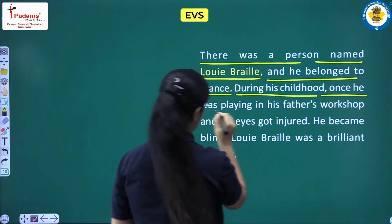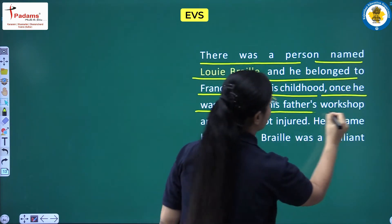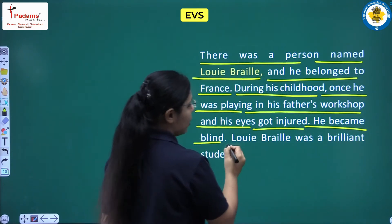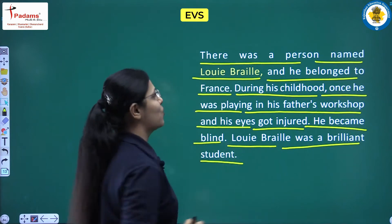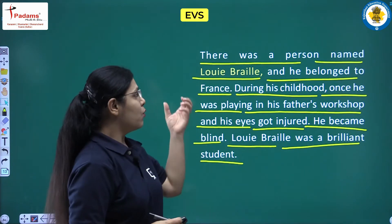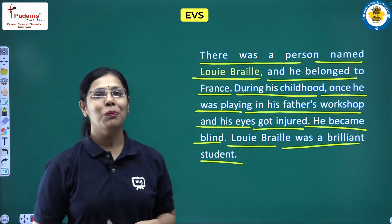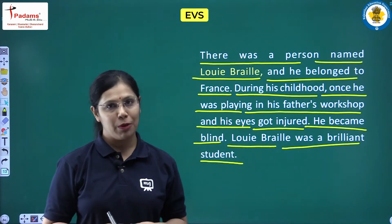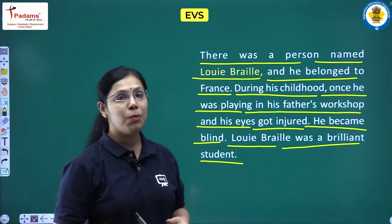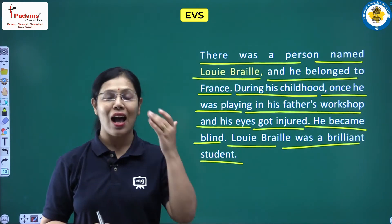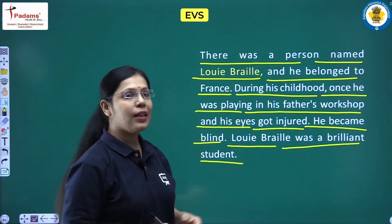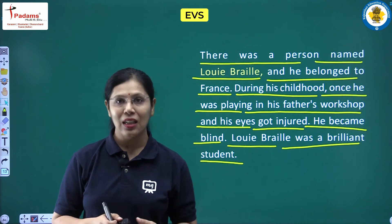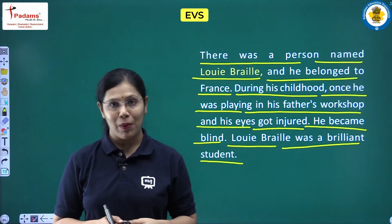During his childhood, Louis Braille was once playing in his father's workshop when his eyes got injured and he became blind. Despite this, Louis Braille was a brilliant student. His teachers managed to teach him at school, even though it was a challenging situation.